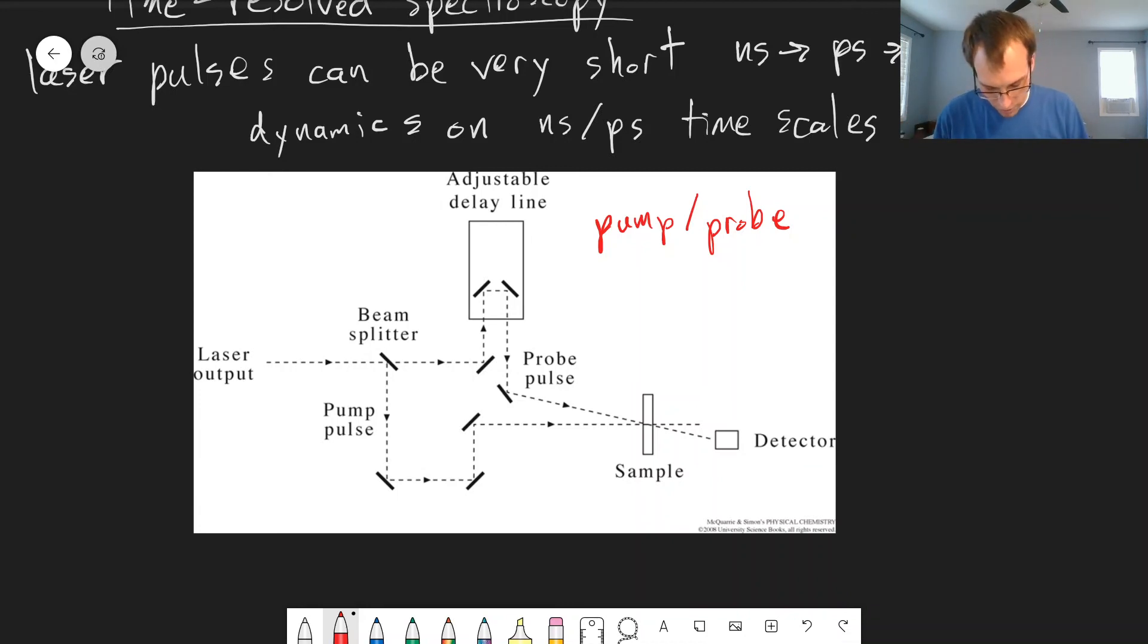Usually these are actually generated from the same laser. We have a laser coming in and we split the light into two parts. Our pump pulse goes through a specific path length and then goes through our sample, and our probe pulse is the other half of the light that went through the beam splitter.